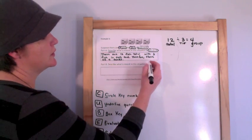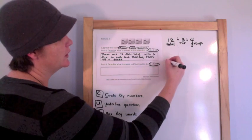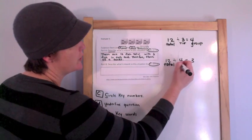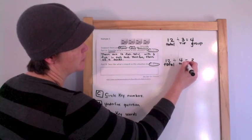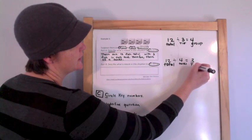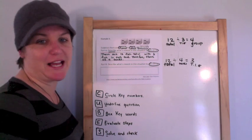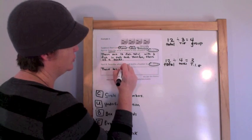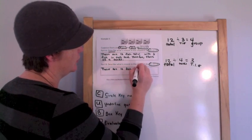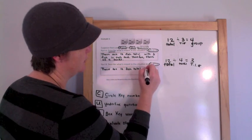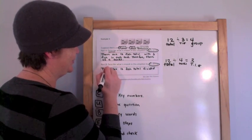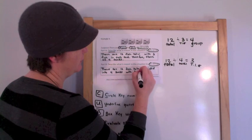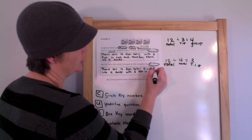Now I've got part B. Describe what is meant by the situation 12 divided by four equals three. Well, in this case, we've got 12 total. We've got four tanks. That would be my group. And there are three things in each. Three fish in each. There are 12 fish total divided into four tanks with three fish in each. Boom.